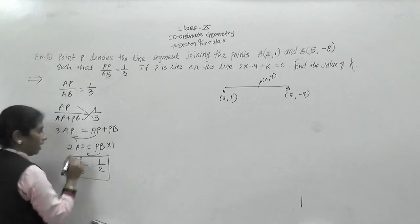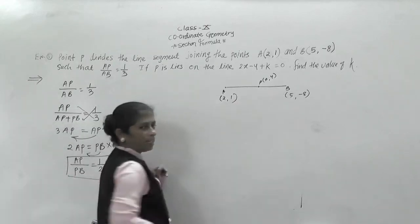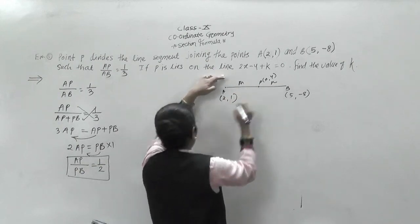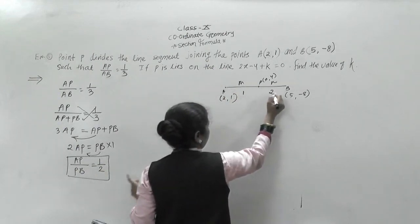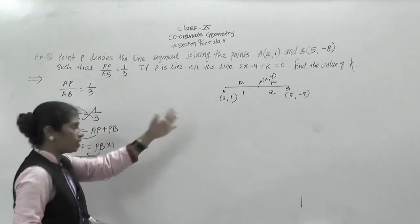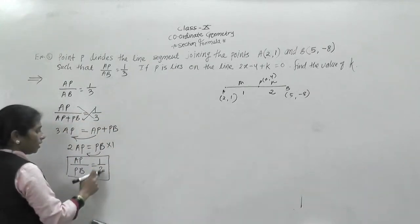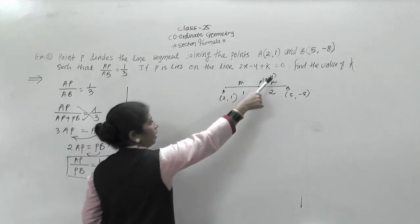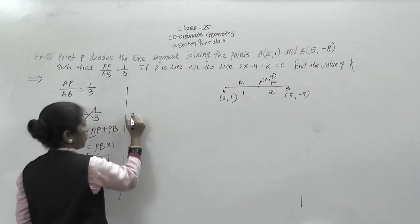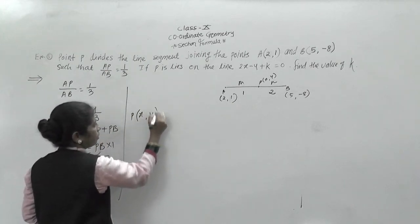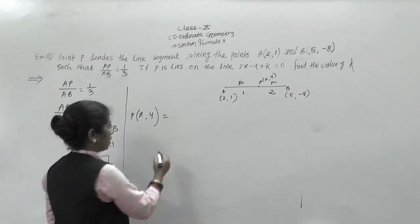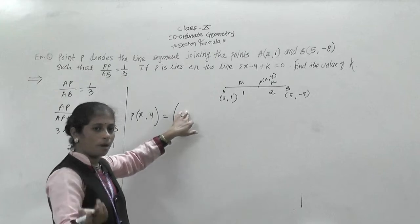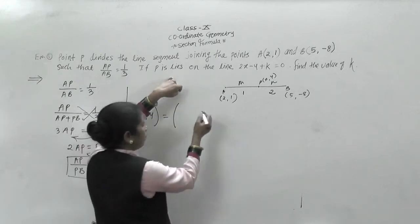We got the ratio AP by PB equals 1 by 2. So M is to N means M is 1 and N is 2, giving the ratio 1 is to 2. Now we will find the coordinates of point P (X, Y) using the section formula: MX2 plus NX1 upon M plus N, comma MY2 plus NY1 upon M plus N.